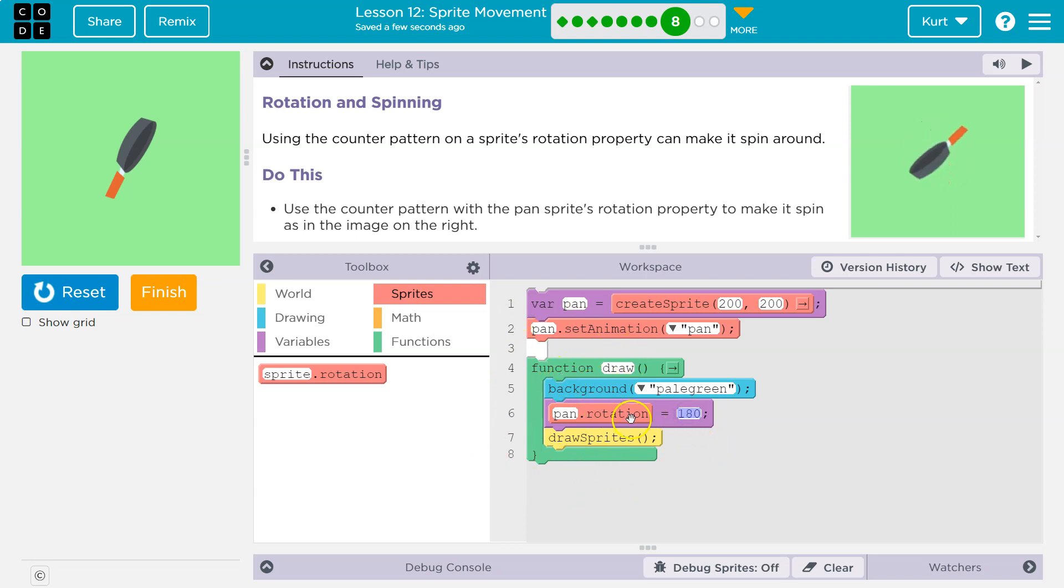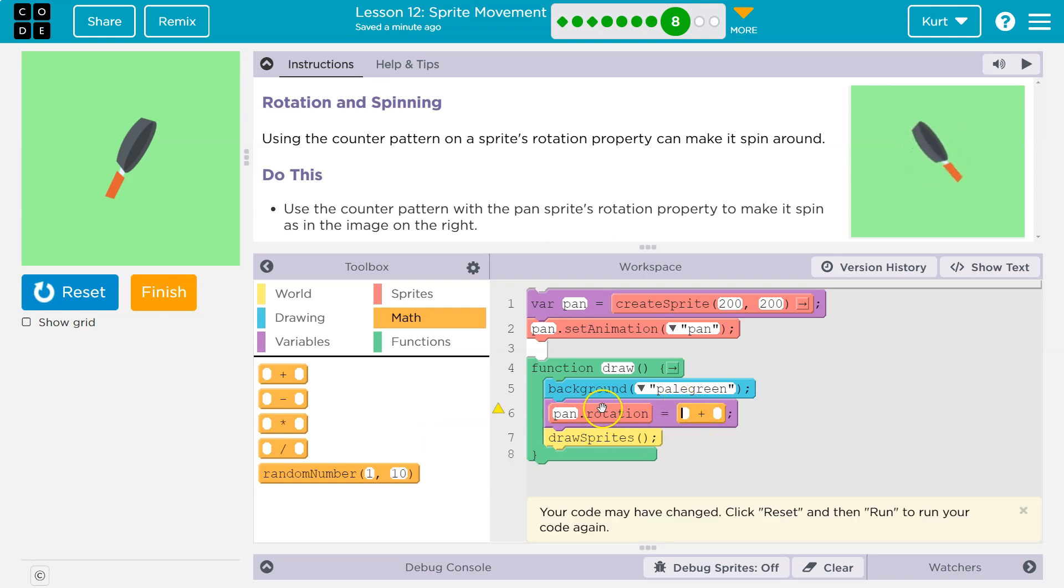How we do that is we take the pan's rotation property and ask the computer to make the pan's rotation equal to the pan's rotation. And it looks like this might be, no, I think it's positive. We want pan.rotation to be equal to pan.rotation plus one or two or something.